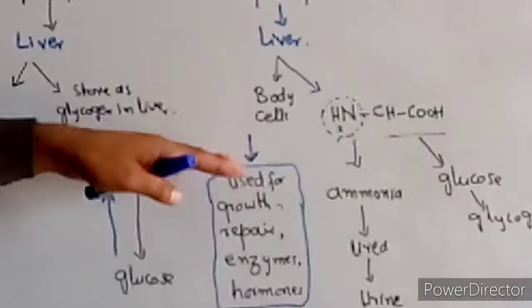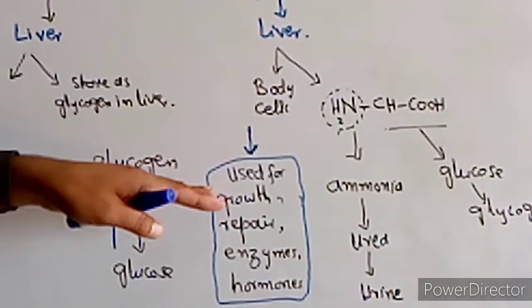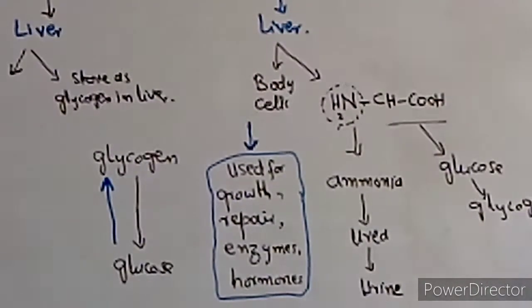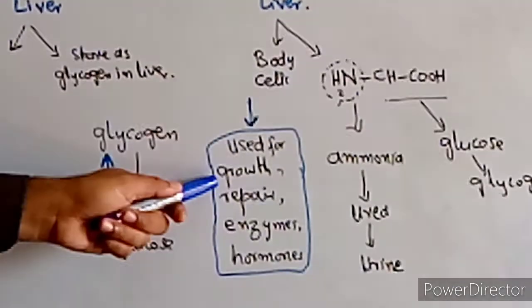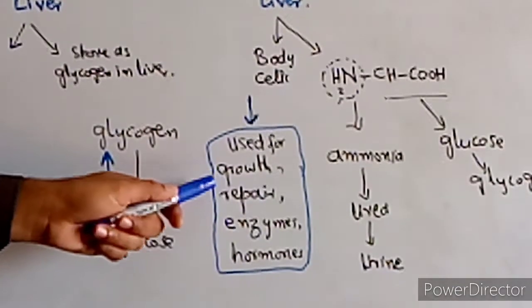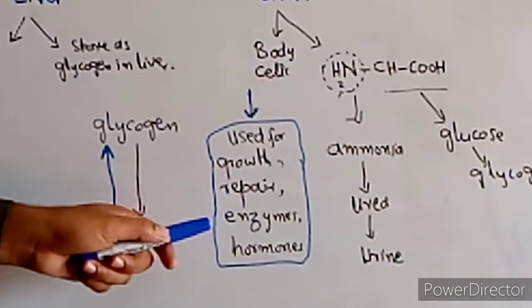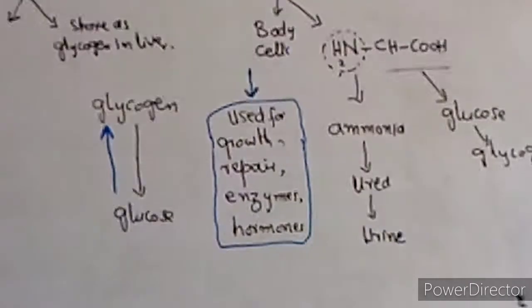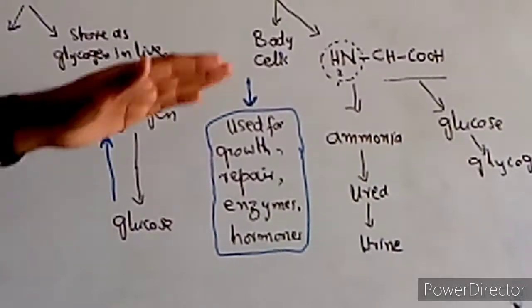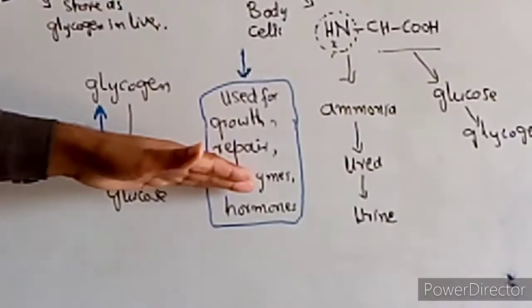When body cells need it, the stored glycogen will be used. It is used for growth purposes and for repairing body cells.